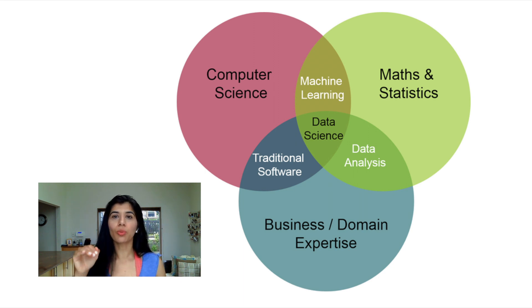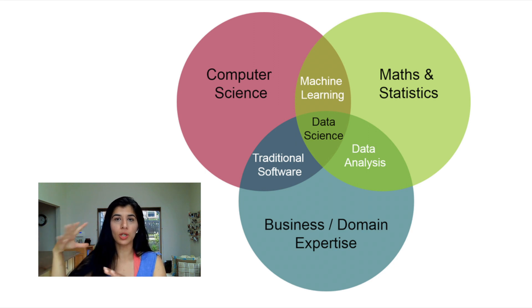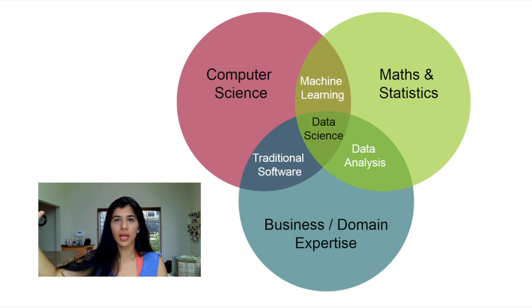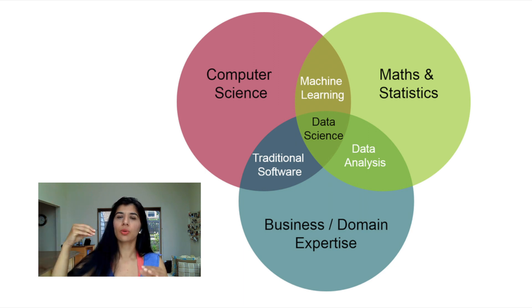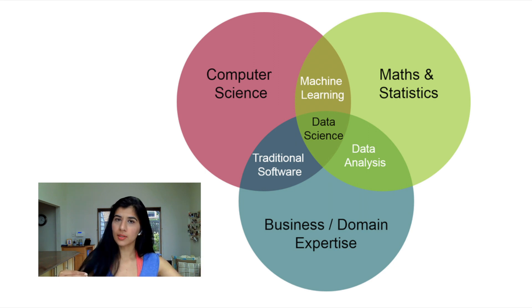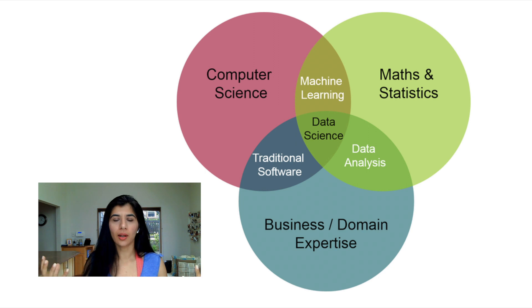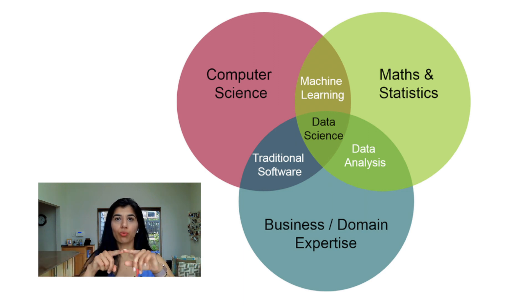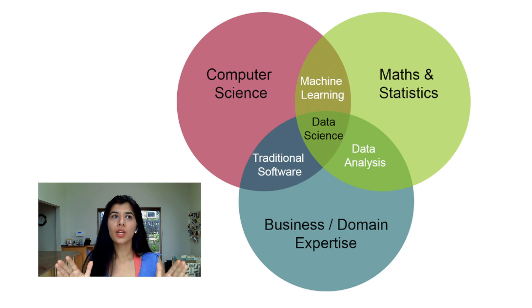You need to figure out which side of the spectrum on this Venn diagram you want to be. Do you want to be in the middle? A little more toward the right for machine learning engineer? More toward computer science, which is more applied scientist? Or more toward the bottom, which is data analyst or business analyst? You need to figure out where your niche is and where you want to pursue your career, and then decide what role you want to pursue.